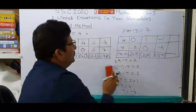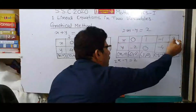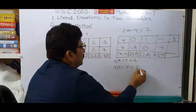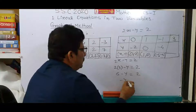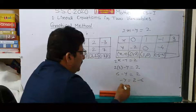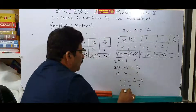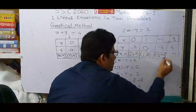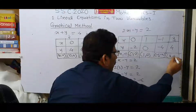After that, take x is equal to 3: 2 into 3 minus y is equal to 2, so 6 minus y is equal to 2, giving minus y is equal to 2 minus 6, that is minus y is equal to minus 4. Therefore y is equal to 4. Your last ordered pair is (3, 4).